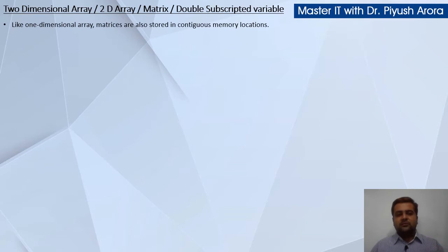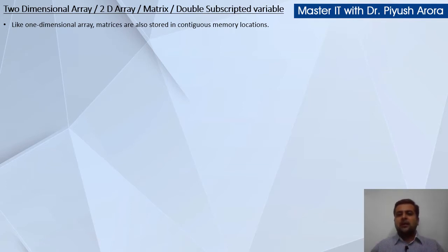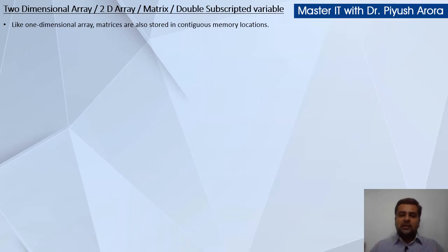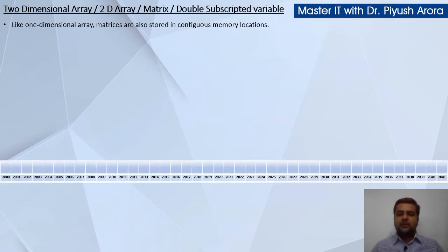Like one-dimensional arrays, matrices are also stored in contiguous memory locations. The main memory is linear, but the matrix is in the form of a table. So it is very necessary to understand how a table-format matrix gets stored in linear main memory.